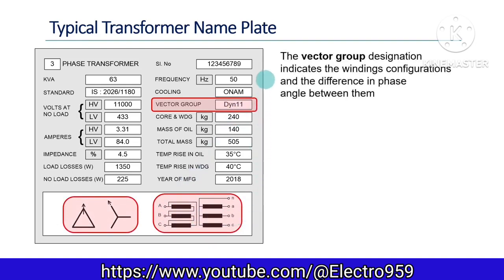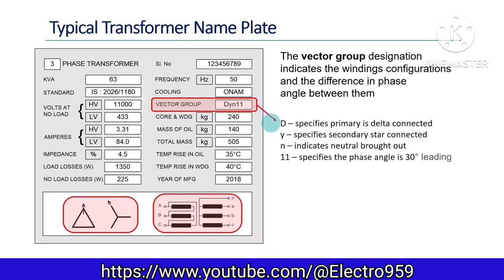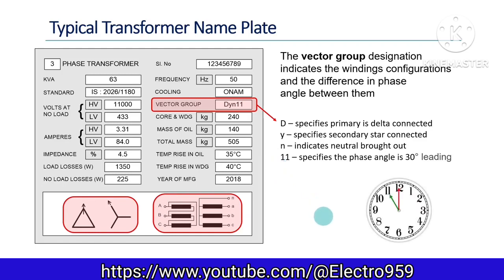The vector group designation indicates the winding configurations and the difference in phase angle between them. The uppercase letter D specifies the primary is delta connected. The lowercase letter Y specifies star connection in the secondary. N indicates that the neutral terminal is available, and the number 11 specifies that the phase difference is 30 degrees leading. The number 11 corresponds to the hand position of 11 o'clock on the clock dial, where the angle between the clock hands is 30 degrees.